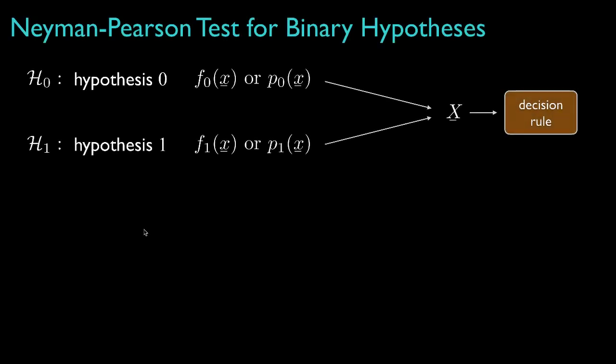The general hypothesis testing problem involves data that are governed by one of two statistical models, and based on those models, we'd like to construct some sort of decision rule for classifying the data into one of the two models. In general, we do that by partitioning the observation space into two regions: one we might call X1 and the other X0, where X1 is the region that classifies data into hypothesis 1.